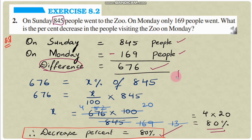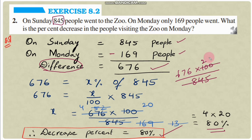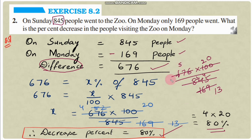So x equals 676 into 100 divided by 845. First cancel with 5: dividing gives 676 into 20 divided by 169. Then cancel using the 13 times table — 13 times 13 equals 169, and 13 times 52 gives the remaining steps. Finally 4 into 20 equals 80 percent. Therefore the decrease percentage is 80 percent.